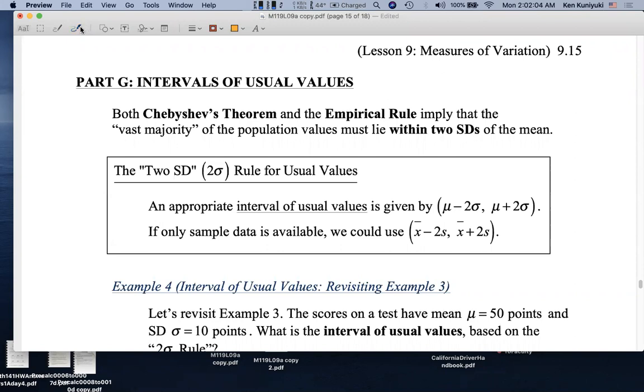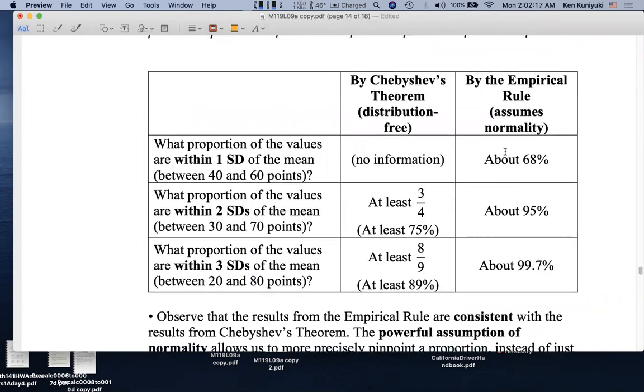Both Chebyshev's theorem and the empirical rule imply that the vast majority of the population values must lie within two standard deviations of the mean. Remember, according to Chebyshev's theorem, at least 75% of the data must lie within two standard deviations of the mean. By the empirical rule, about 95%, almost all the data will lie within two standard deviations of the mean, if you assume a normal bell shape approximately.